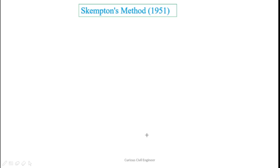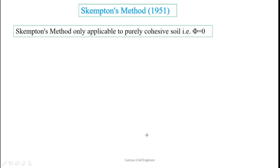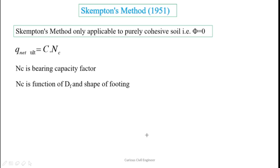We'll start with Skempton's method, 1951. The Skempton method is only applicable to purely cohesive soil — a clay soil which has phi equals to 0. The net ultimate bearing capacity is given by a very short formula: q_net_ultimate equals c times nc. It's a very short and sweet formula.